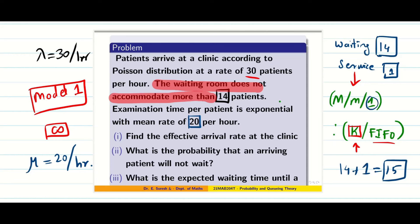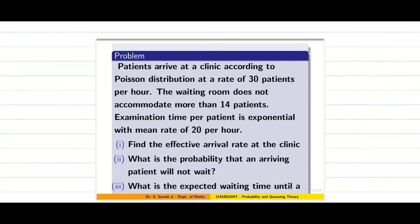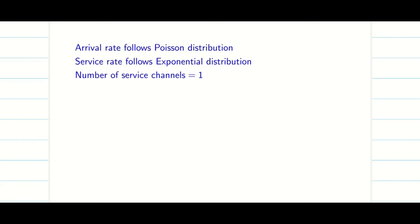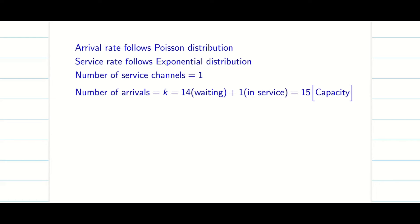Now let us look at what is being asked: find the effective arrival rate of the clinic, the probability that an arriving patient will not wait, and the expected waiting time. Arrival rate follows Poisson, service rate follows exponential distribution, and the number of service channels is 1, making this M/M/1 in Kendall's notation.